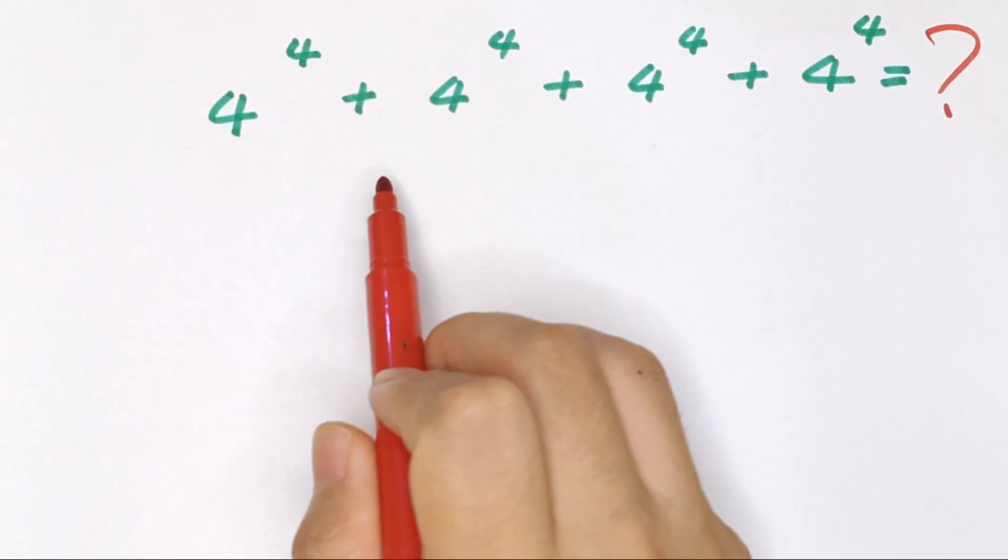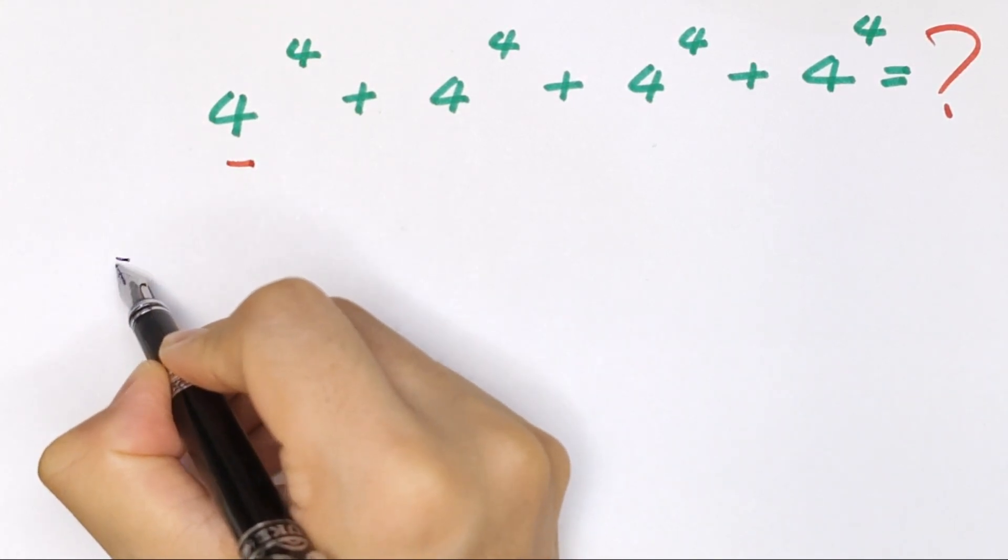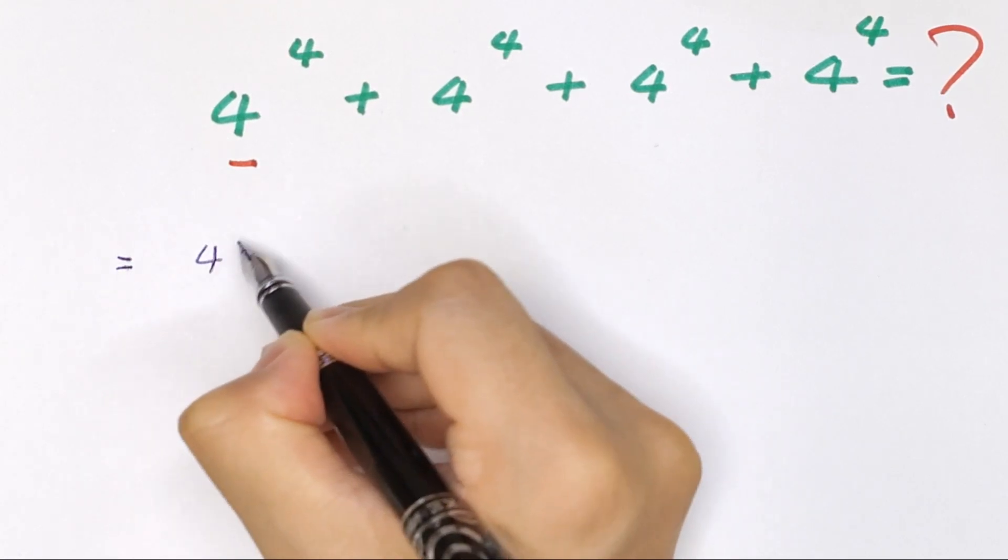First, 4 to the power of 4 is common, so we take this out of the bracket. It will be equal to 4 to the power of 4...